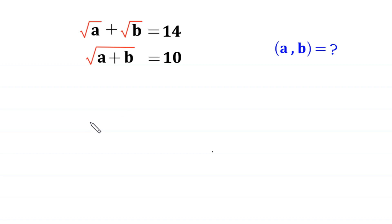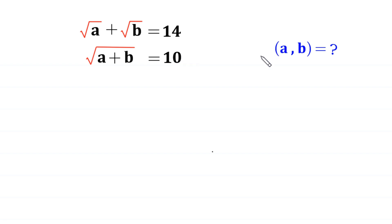Hello everyone, you are welcome to how to solve this very nice system of equations. Root a plus root b is equal to 14, and root a plus b is equal to 10. Our job is to find all possible values of a and b.